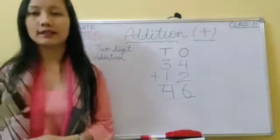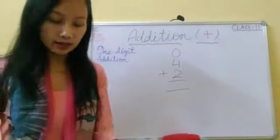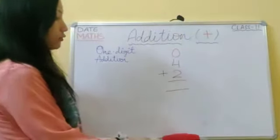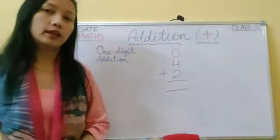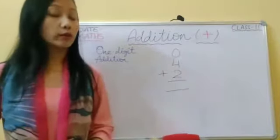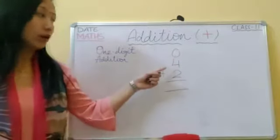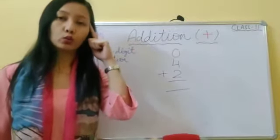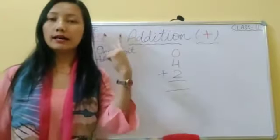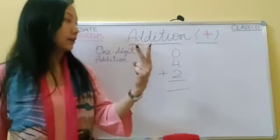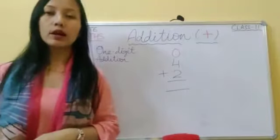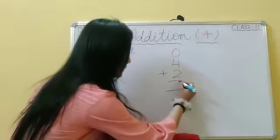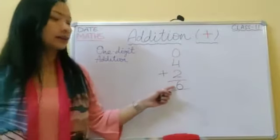Students, on page number fourteen you will do this work by yourself. I am doing the first part for you. You have to add four plus two. Keep the greater number four in your head and count on two: four, five, six. Four plus two is equal to six. Six is the sum.